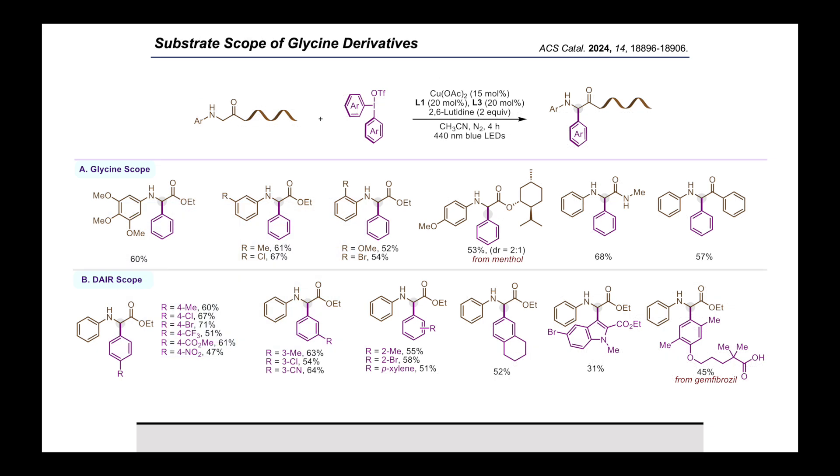Then we screened the substrate scope of the site-selective arylation process. Initially, we varied the scope of glycine derivatives, where electron-rich and electron-deficient aryl rings of N-aryl substituents were well-tolerated and giving their desired products in moderate to good yields. However, the ester part of the glycine was varied with amide and ketone functional groups, which were well-accommodated in the reaction medium.